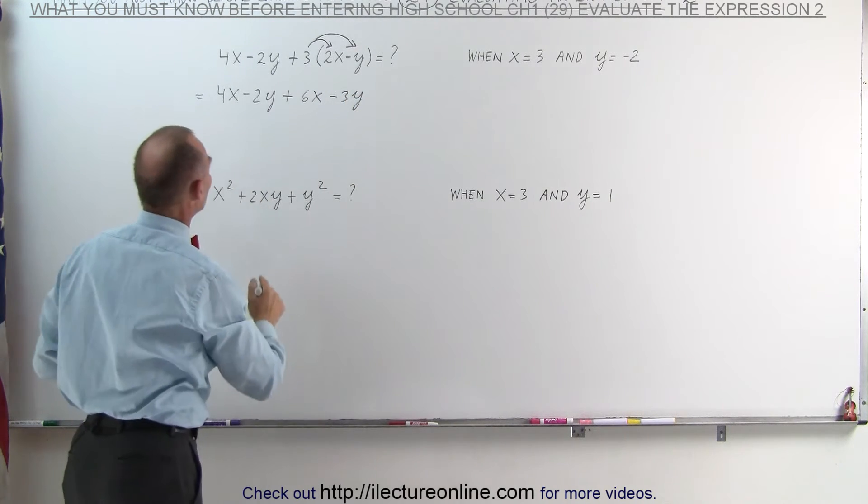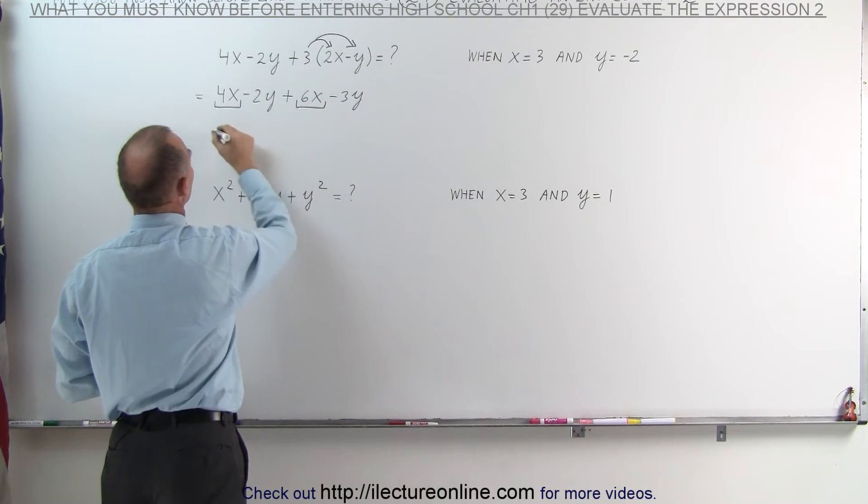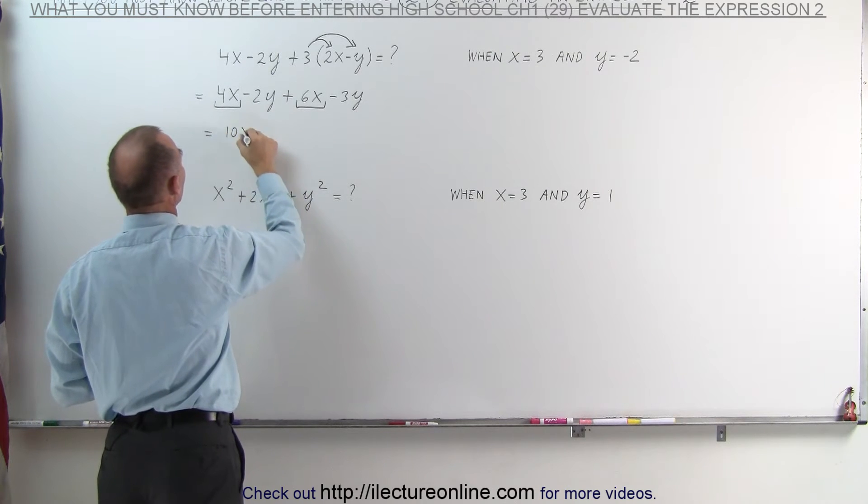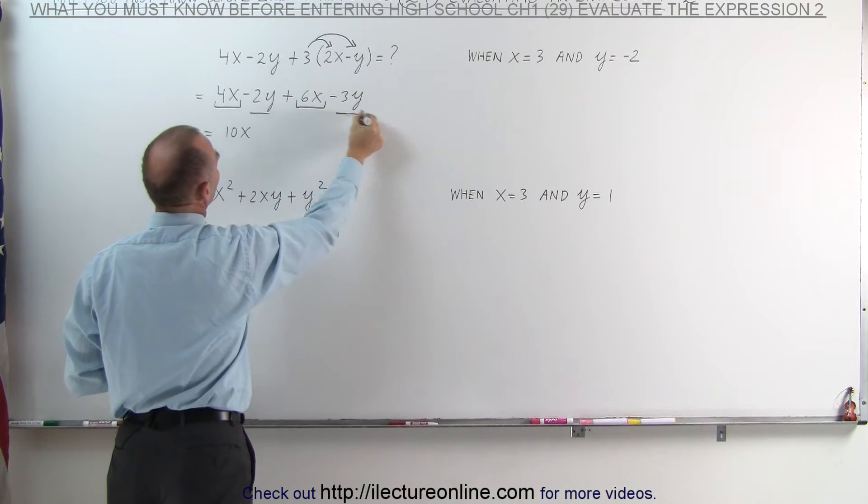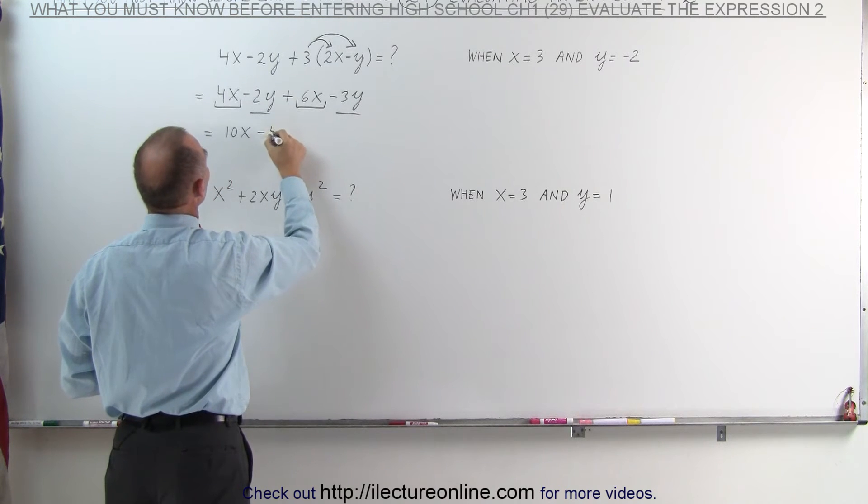Now we're going to combine like terms. First, we can combine the terms that have an x in them. This becomes 4 plus 6, which is 10x. Then we can combine the terms that have a y in them: minus 2 minus 3, which is minus 5y.